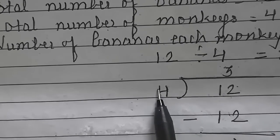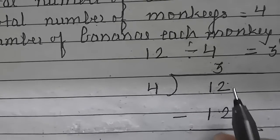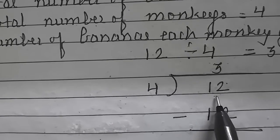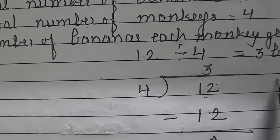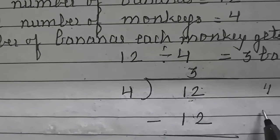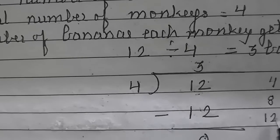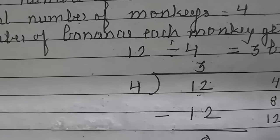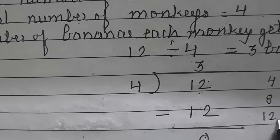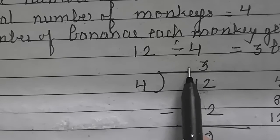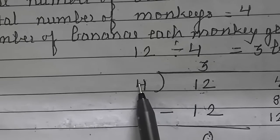So let's start dividing this 12 means total number of bananas with number of monkeys. So 12 divided by 4. Now we have to say the table of 4 till we get the number 12. So better we will write a table here. 4 ones are 4, 4 twos are 8 and 4 threes are 12. At the place of a third we get the number 12 in table of 4.